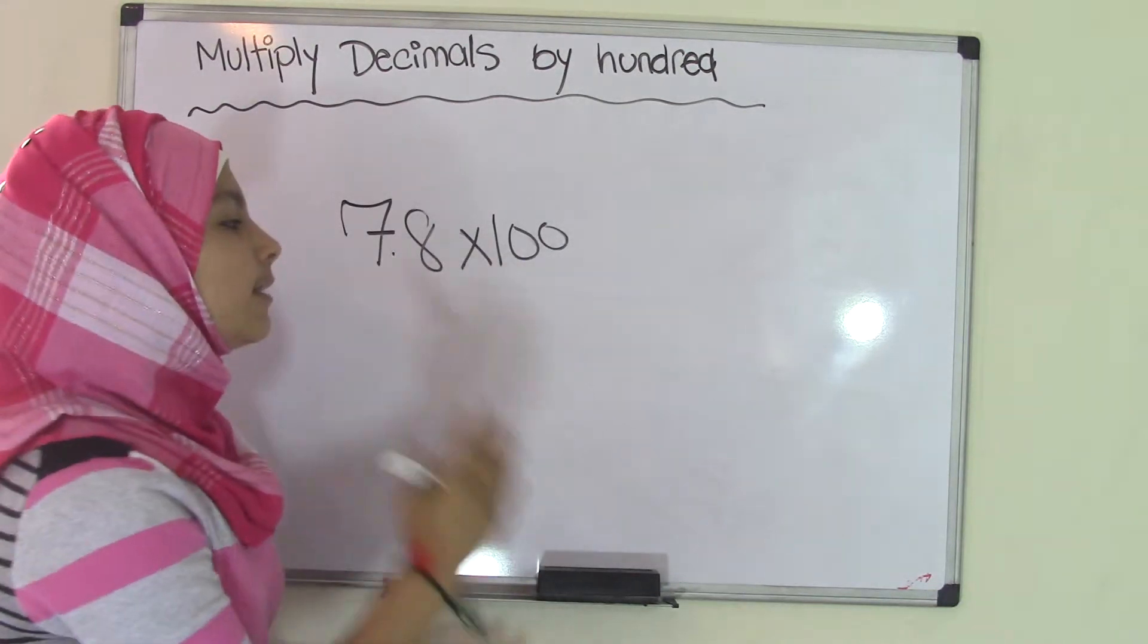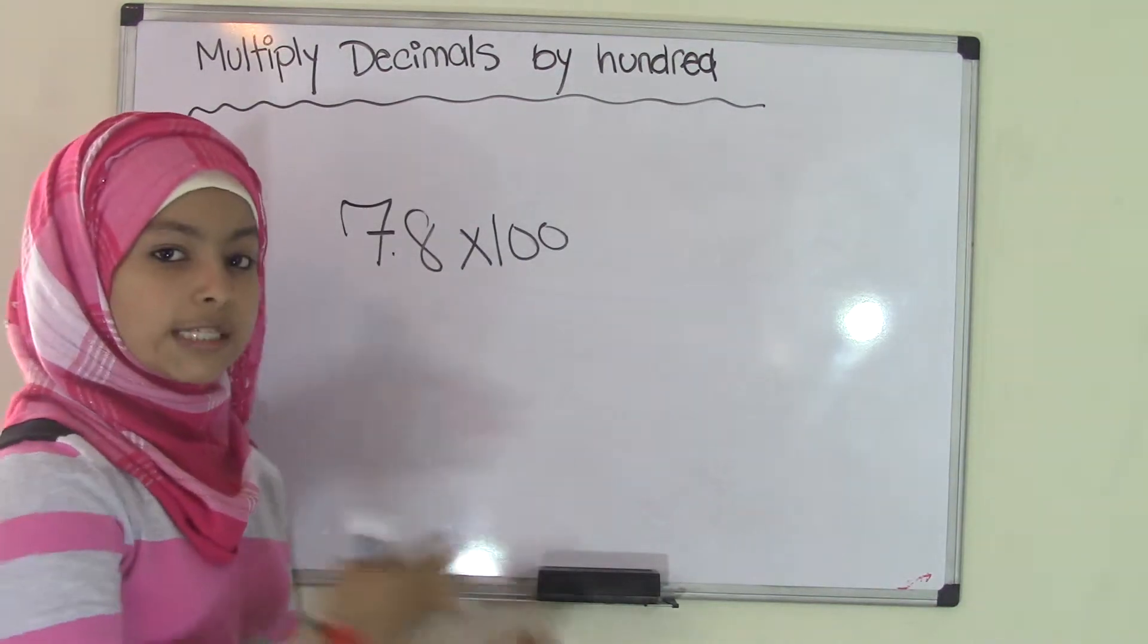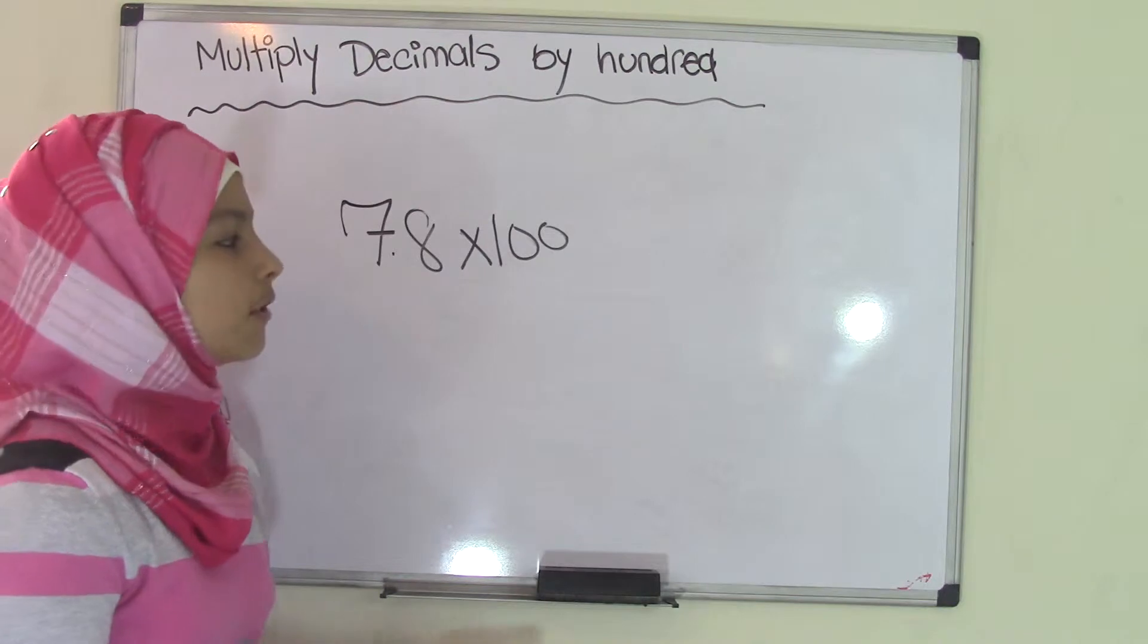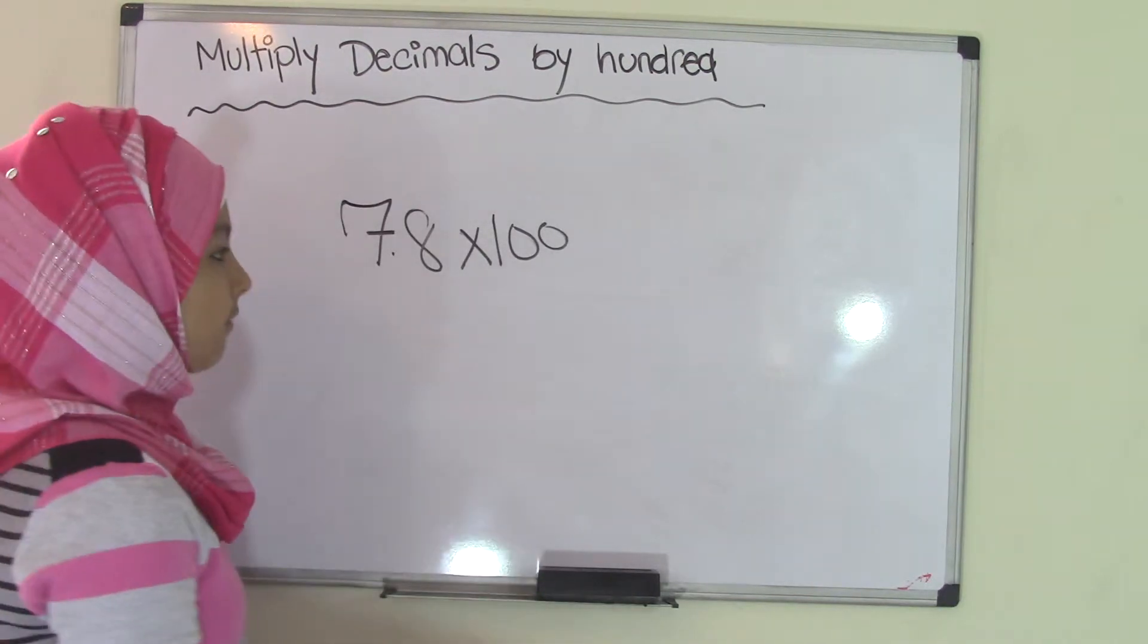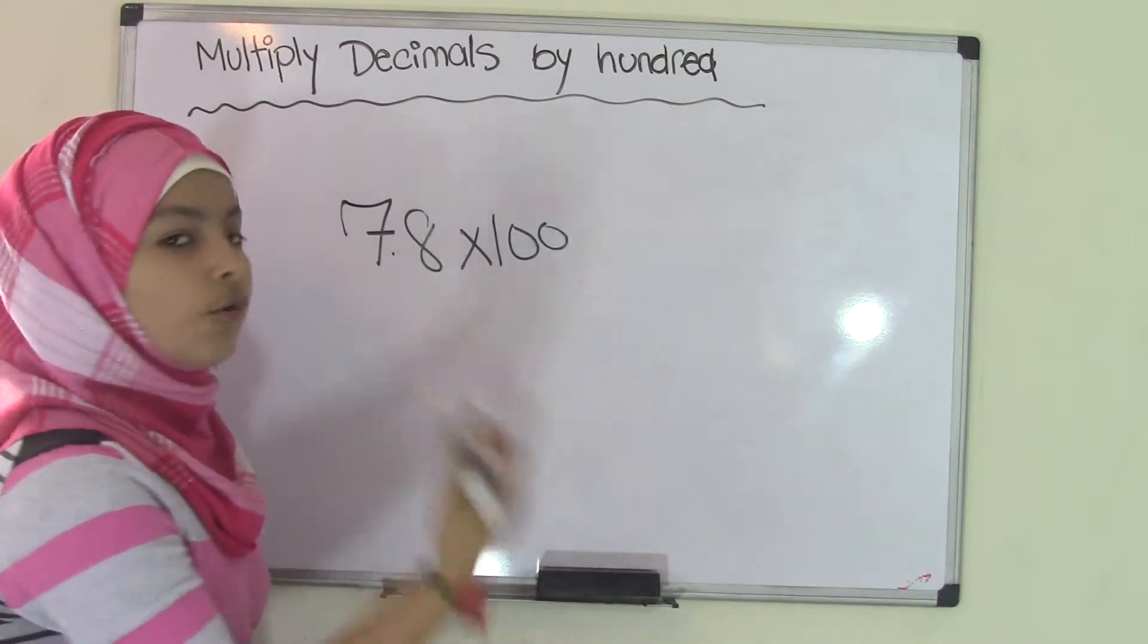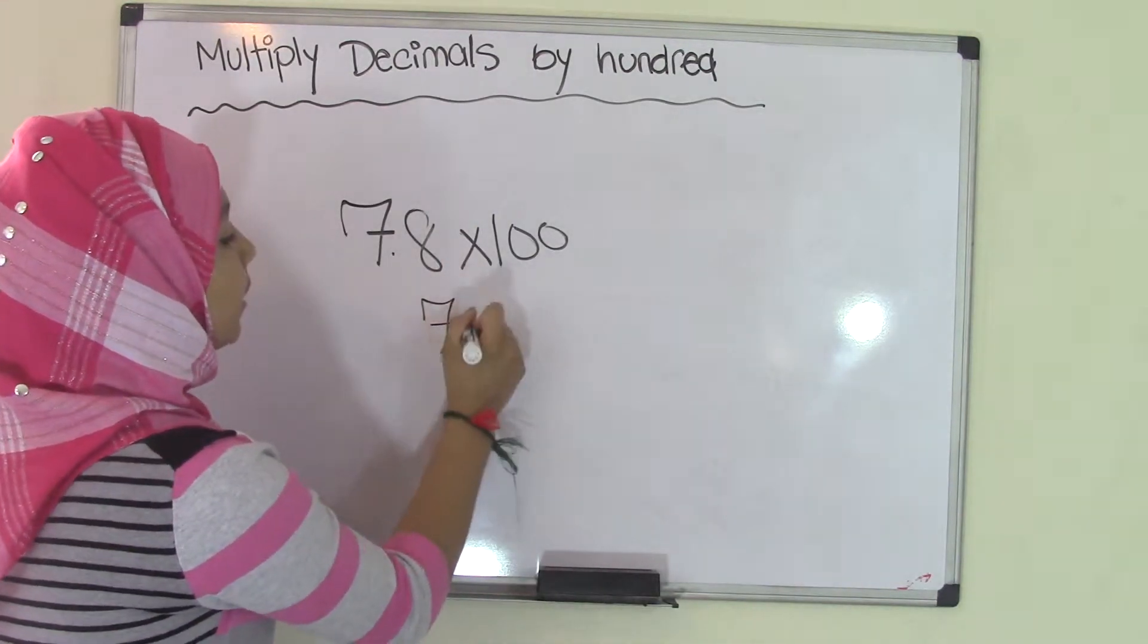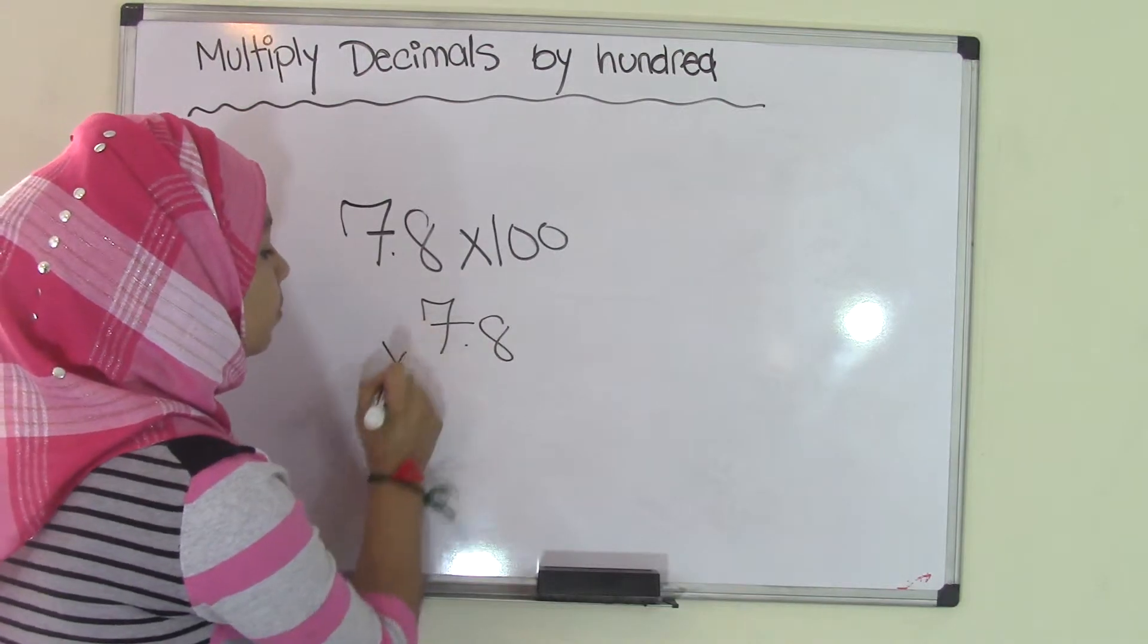This is how most problems will be displayed in textbooks and workbooks in 5th grade, but the first thing that we have to do, the first step that we have to take, is write this over in vertical form which will be like this: 7.8 times 100.